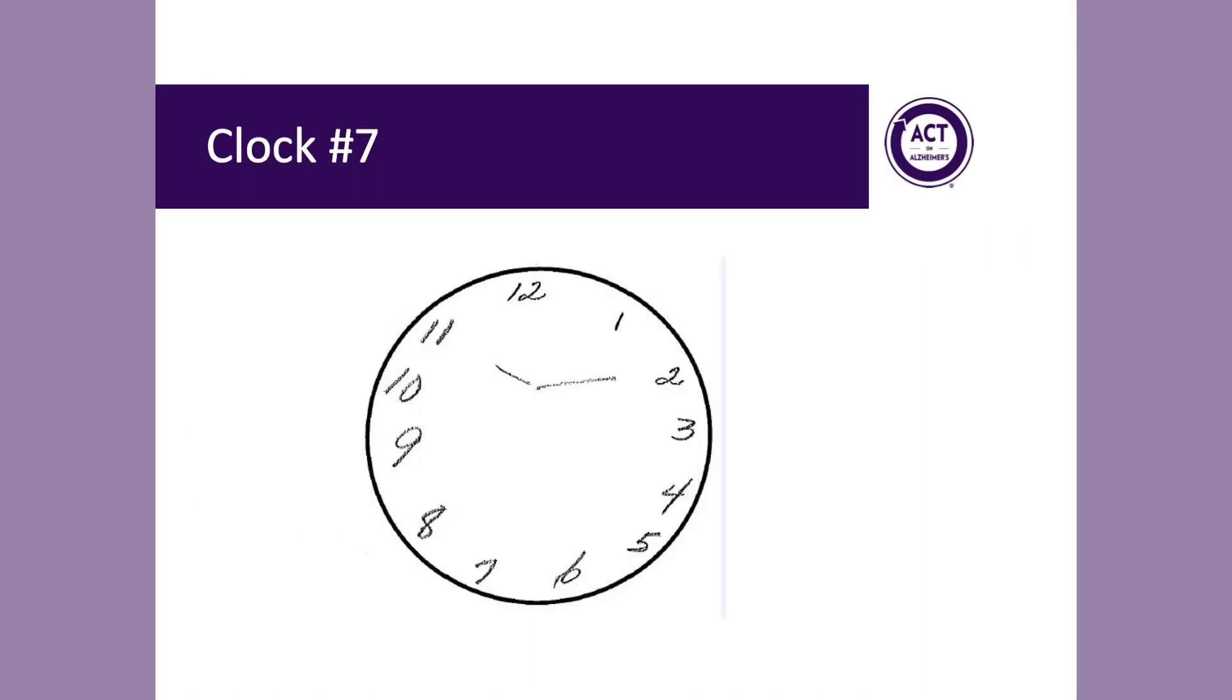In clock number 7, again, all of the numbers 1 through 12 are represented. There are none missing, no duplicates, and all numbers are roughly in their correct locations. In addition, the patient has correctly set the hands to 10 past 11, and therefore, this clock receives a full 2 points.